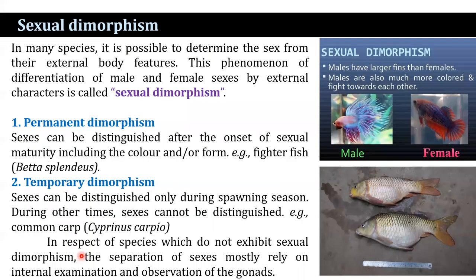What is sexual dimorphism? In many species, it is possible to determine the sexes from their external body shape and other different features. This phenomenon of differences between male and female sexes by external characters is known as sexual dimorphism. It may be permanent dimorphism or it may be temporary dimorphism.